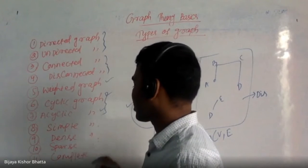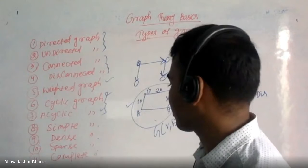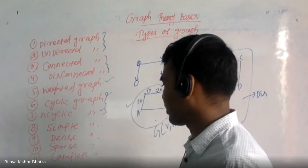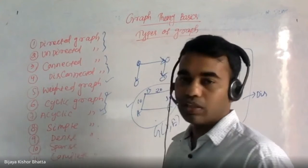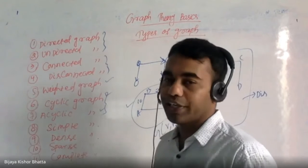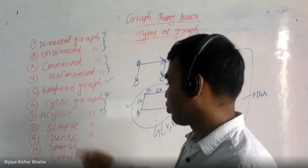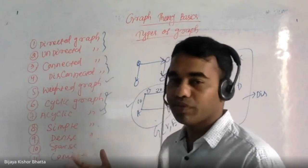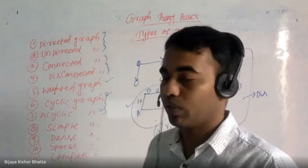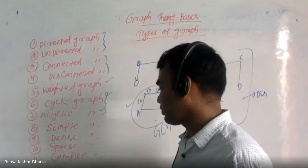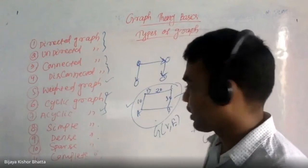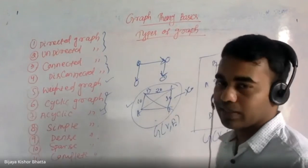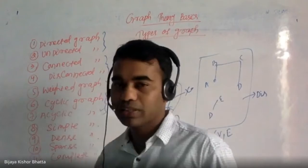Then we have simple, dense, sparse, and complete graphs. A simple graph means no cycle — no self-loop and no multi-edge. Dense means the number of edges is more, closer to the maximum possible number of edges. Sparse means the number of edges is comparatively low, closer to the minimum. Complete means every vertex is connected to every other vertex.